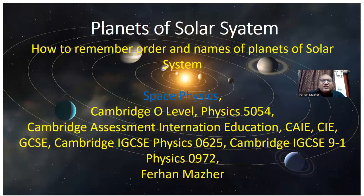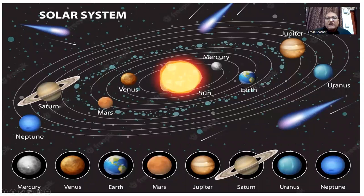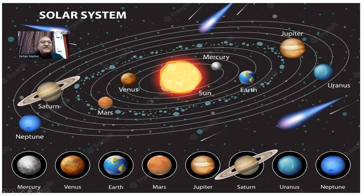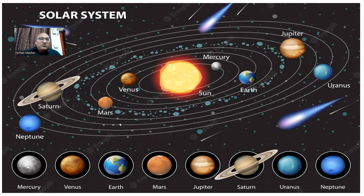For example, you see, this is our solar system. In this solar system, you can see that this is the Sun, and around this we have these planets. The very first important thing in this chapter is that you should remember the names of these planets in their exact order. The planet nearest to the Sun is Mercury, then Venus, then Earth, then Mars, then Jupiter, Saturn, Uranus, and Neptune.